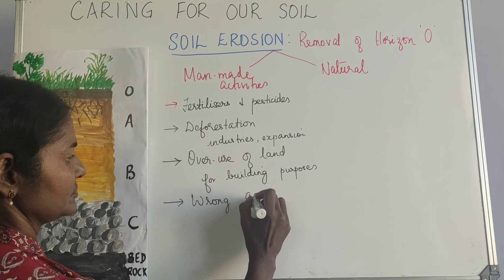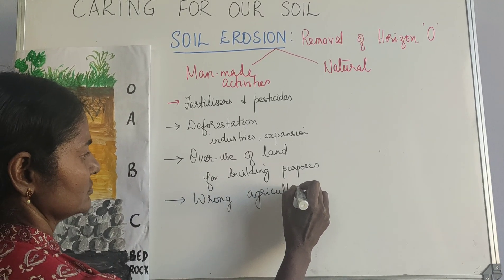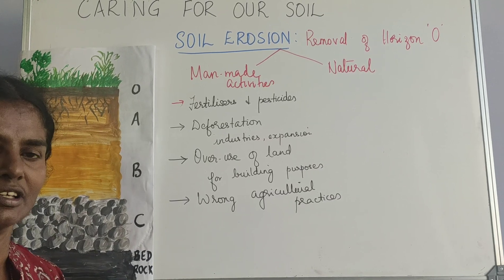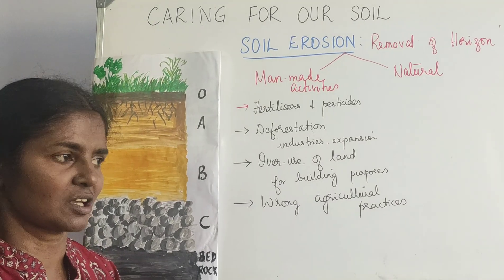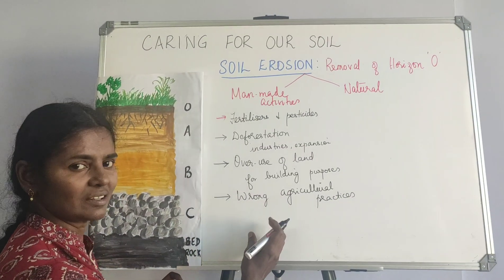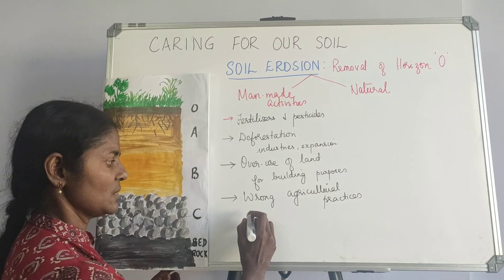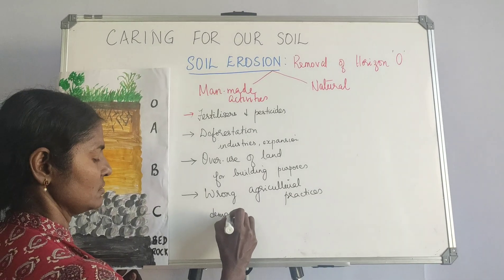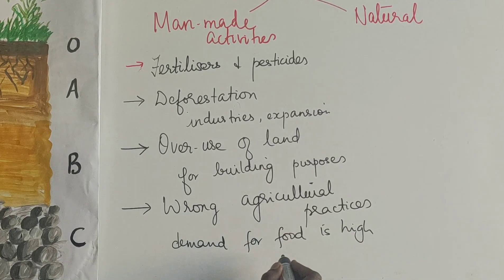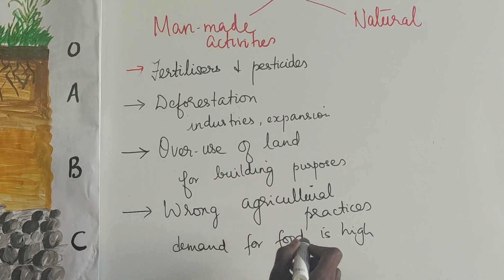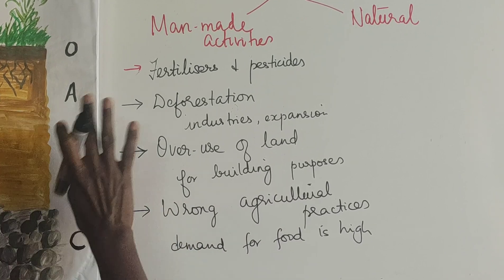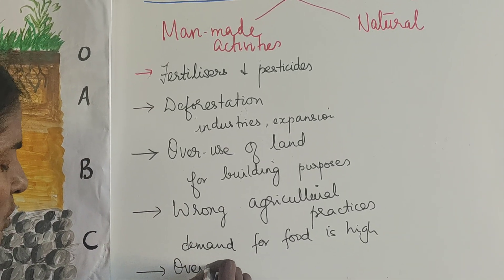Wrong agricultural practices also cause soil erosion. Earlier, farmers used crop rotation and would leave the land fallow for some time so it could naturally regain its quality. But now, because the demand for food is high, everyone is in a hurry to get maximum yield in the shortest time, and that results in wrong agricultural practices that erode the soil.